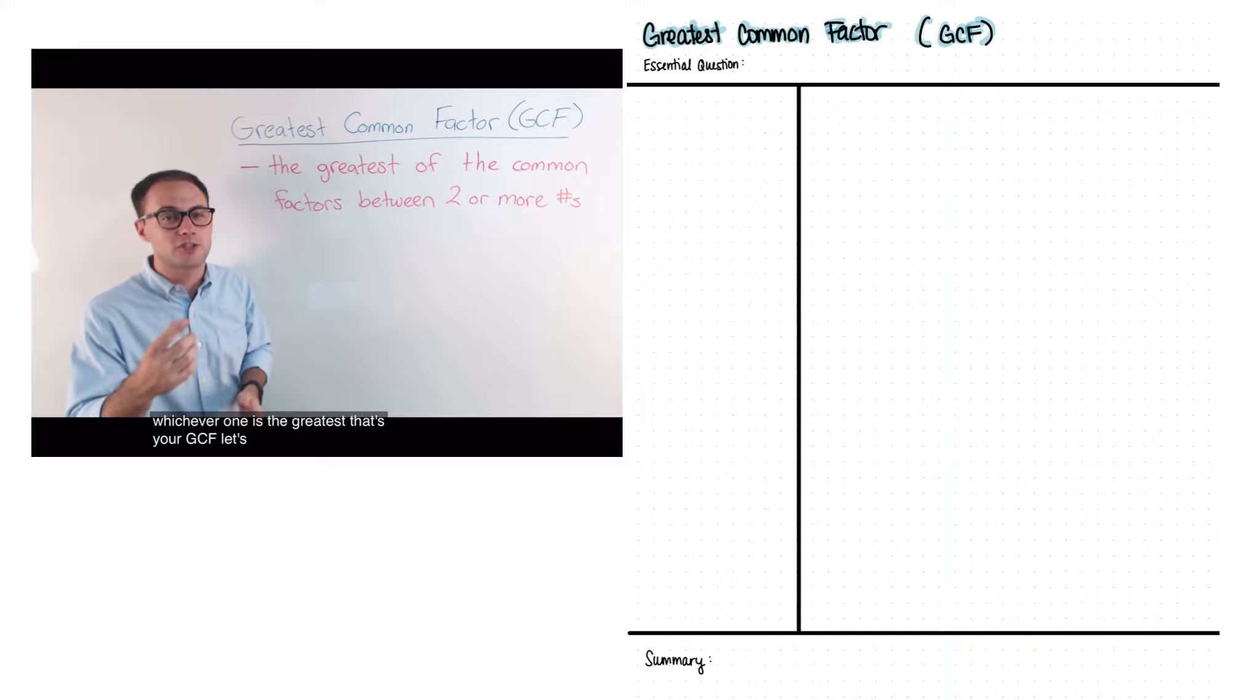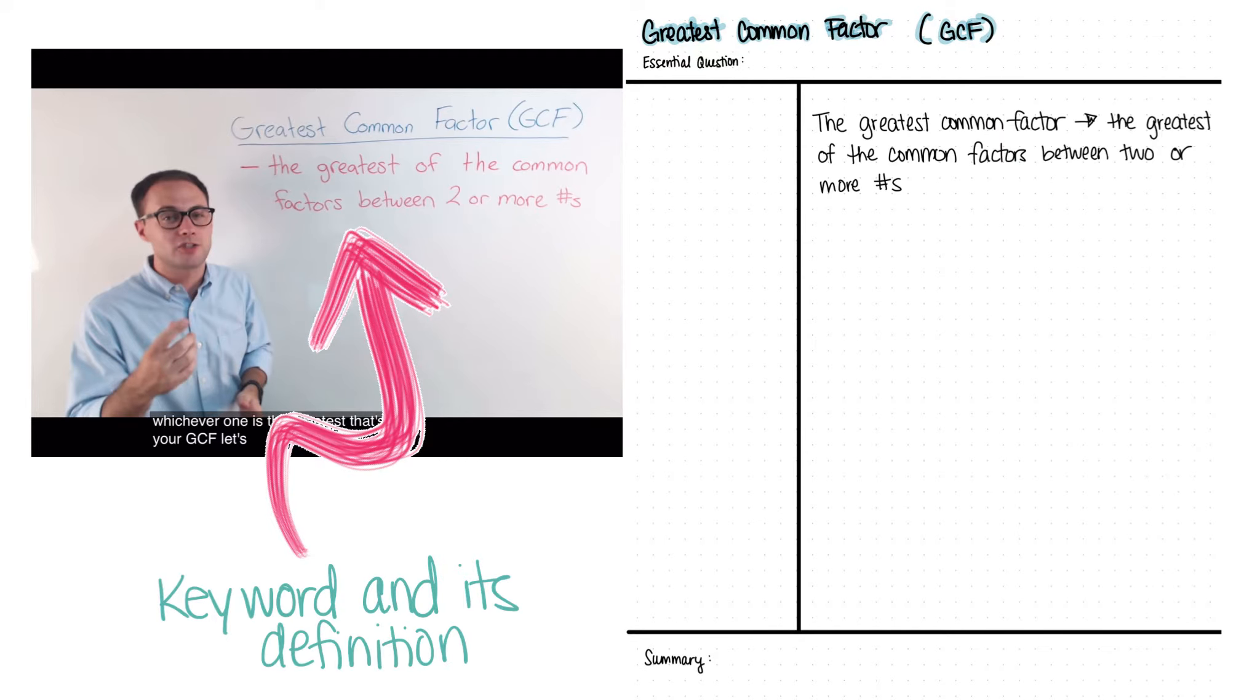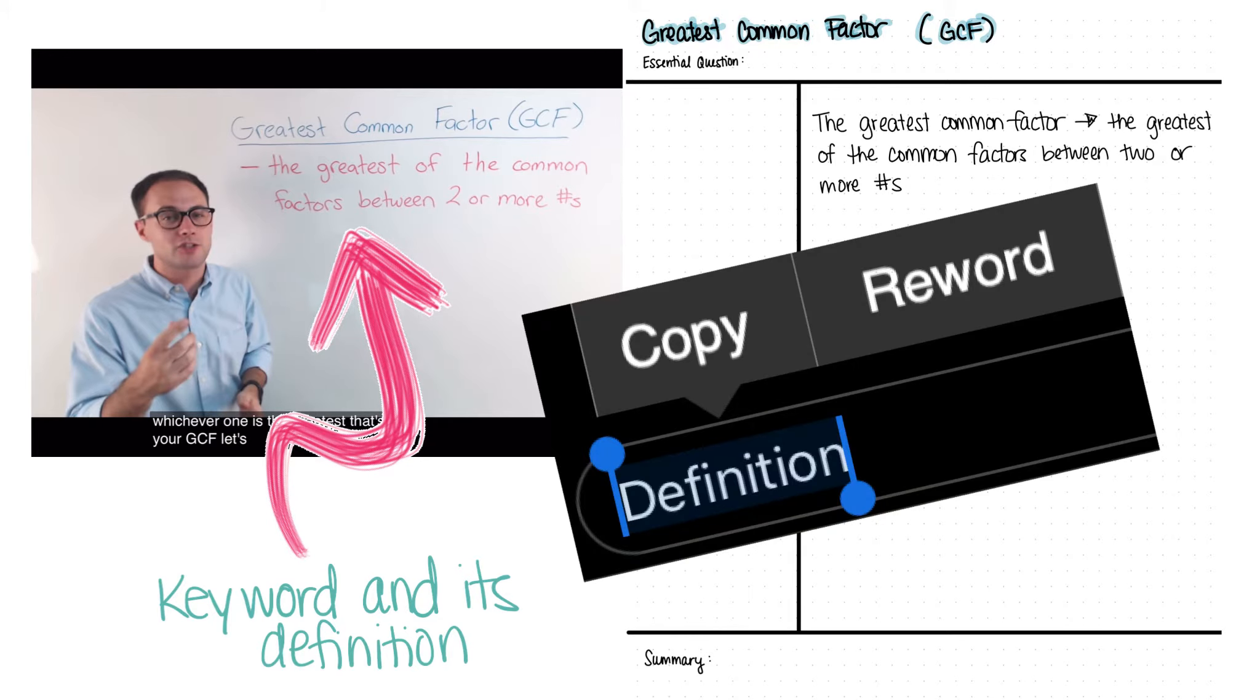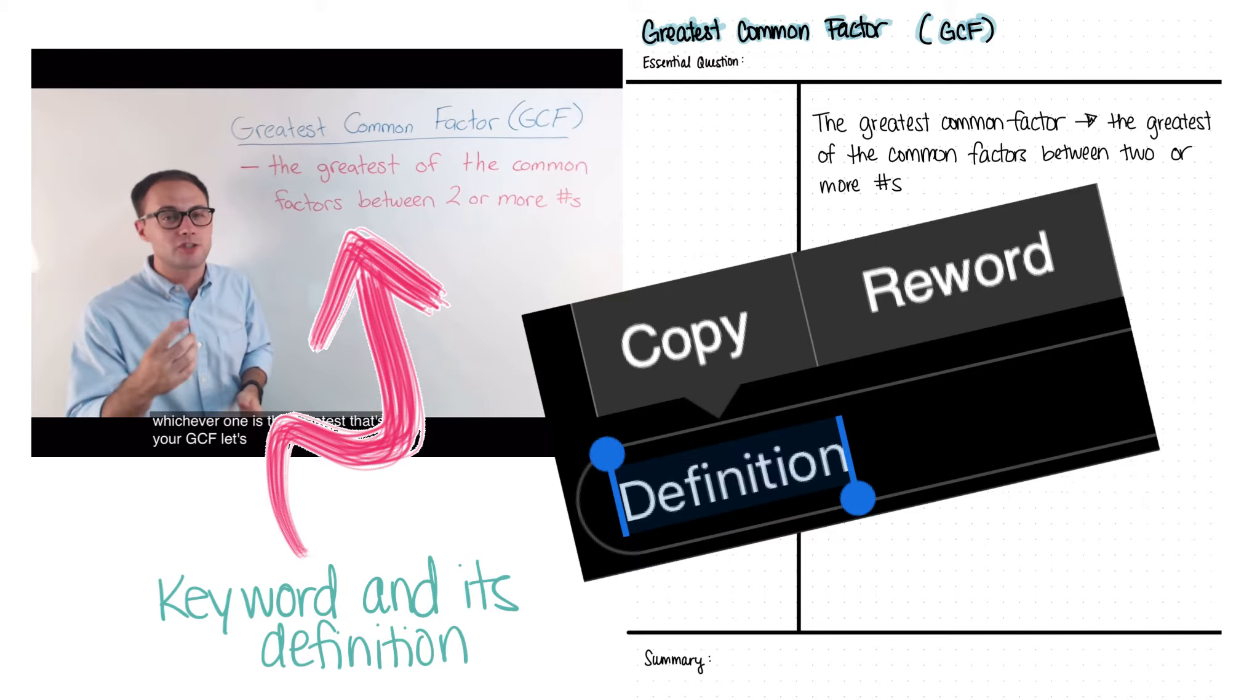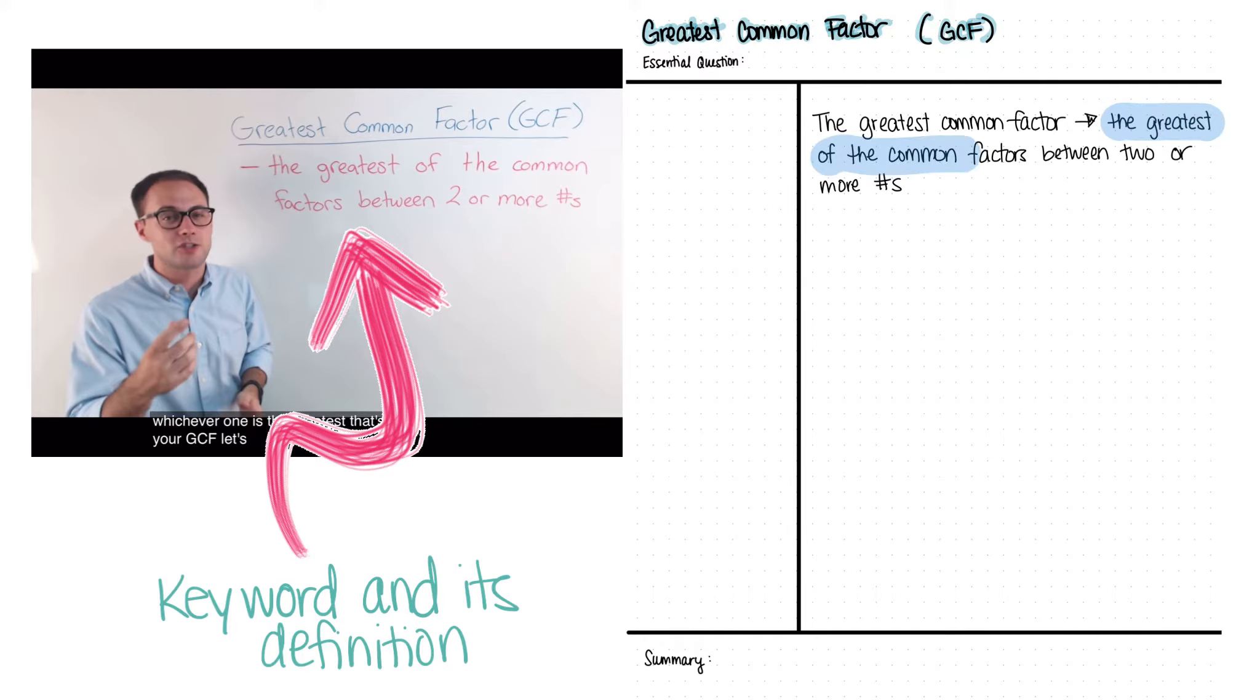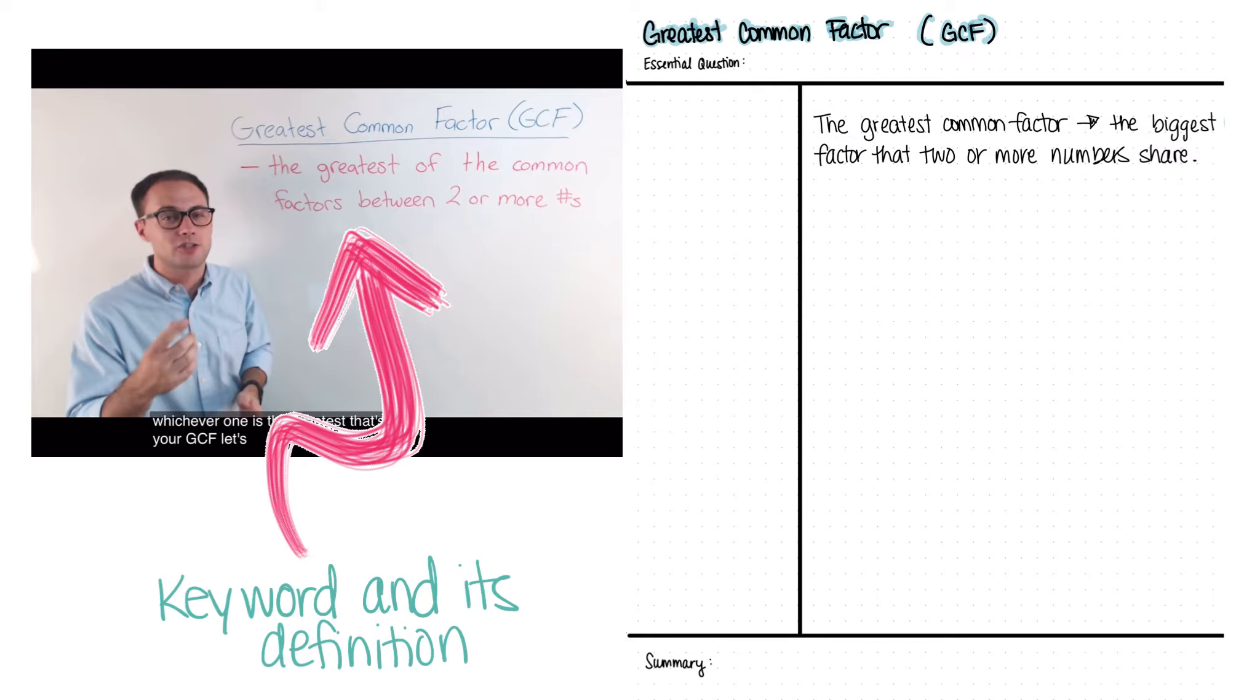Let's try an example. In his video, he provided us with a keyword and its definition. The Greatest Common Factor is the greatest of the common factors between two or more numbers. Now, we do not have to write the definition in the exact same way that he did. If we take the time to reword this definition, we are processing information and helping our brains learn this new information. So, instead of writing the Greatest Common Factor between two or more numbers, let's reword this as the biggest factor that two or more numbers share.